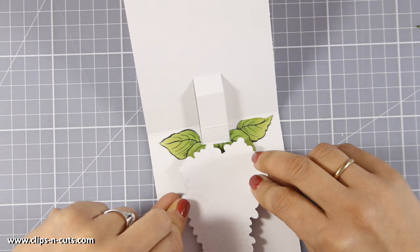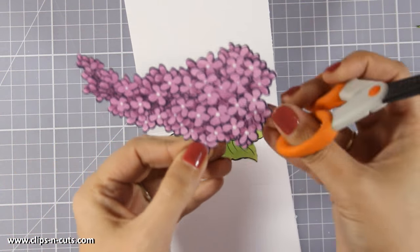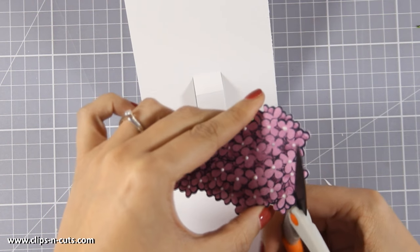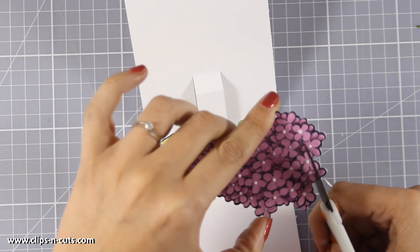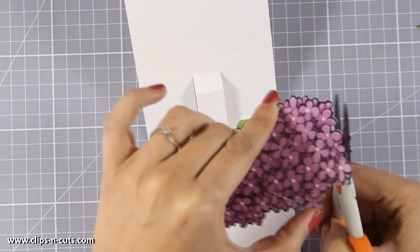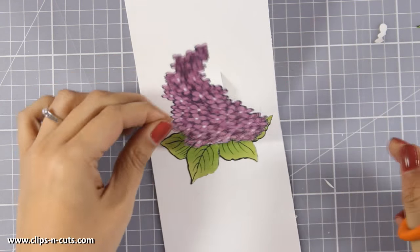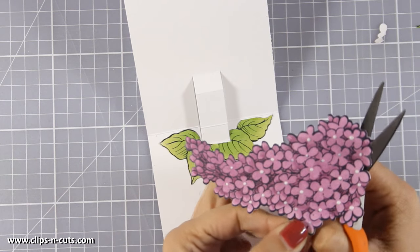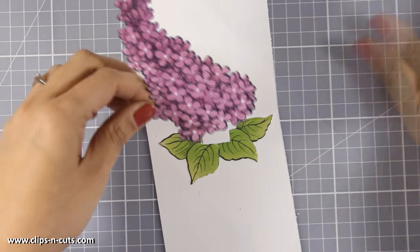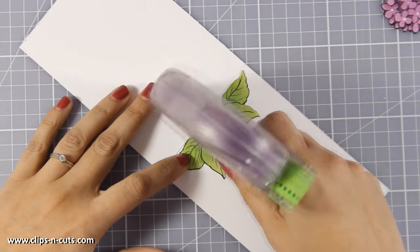And before you stick your pop-up elements to that column make sure that when you close your card nothing sticks out. My lilac here is quite long so I am going to chop off just a couple of flowers at the bottom to make sure that when I close this panel the top of my lilac is not going to fall outside of the card.